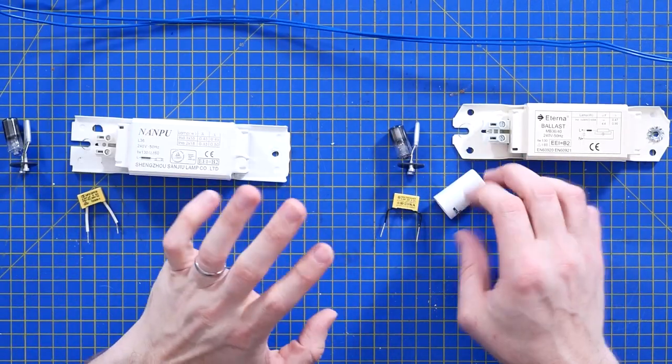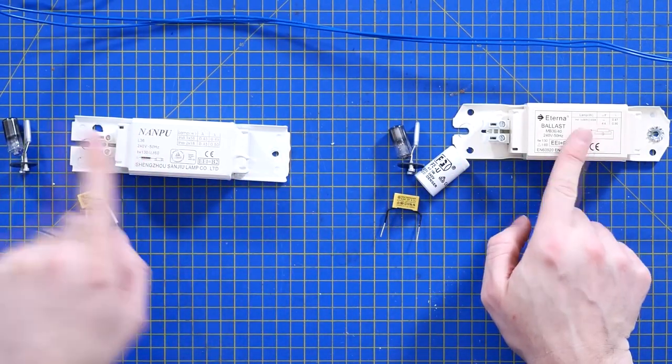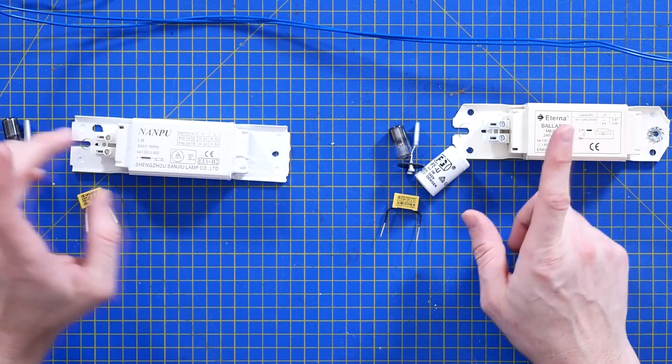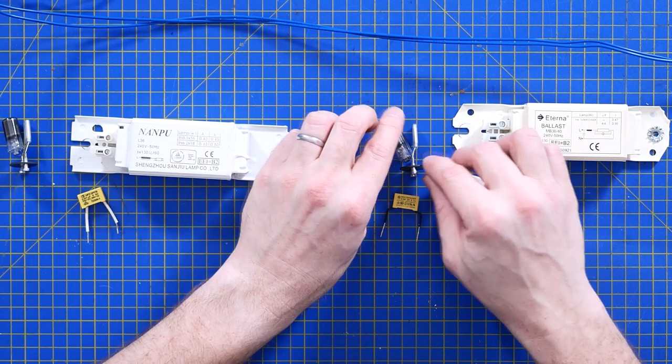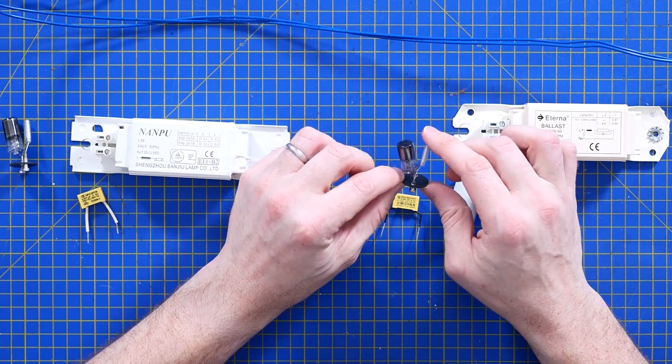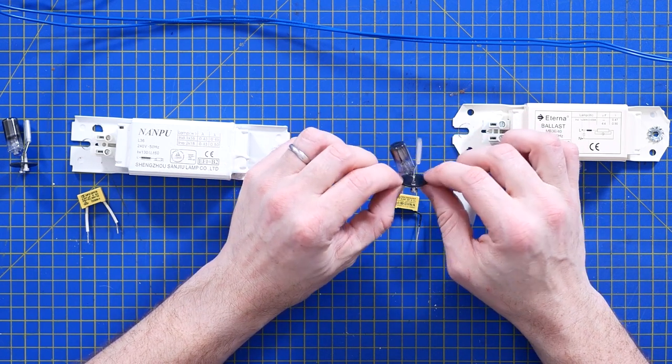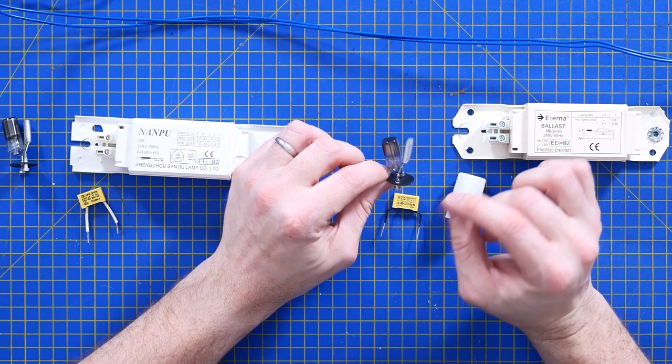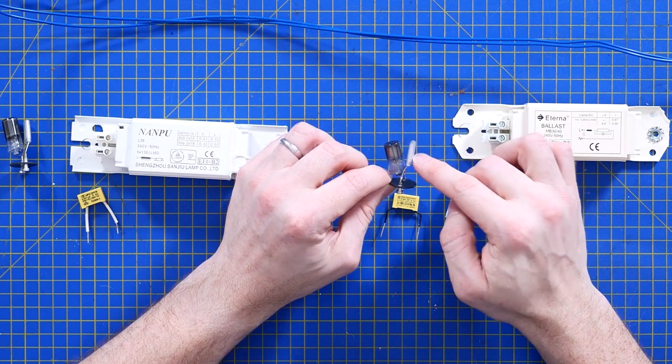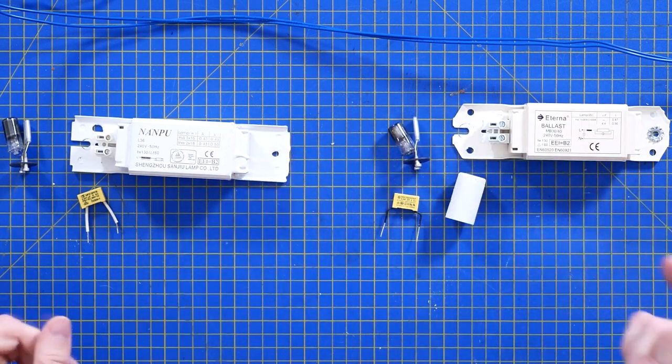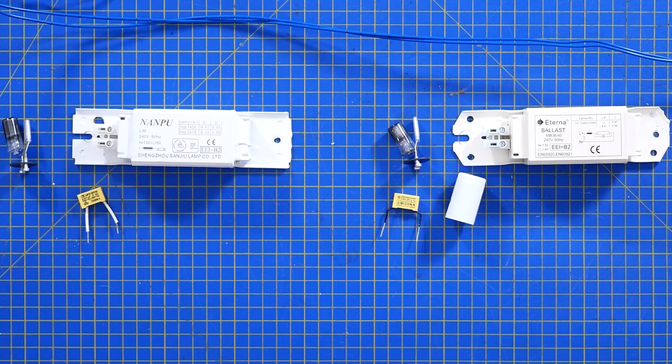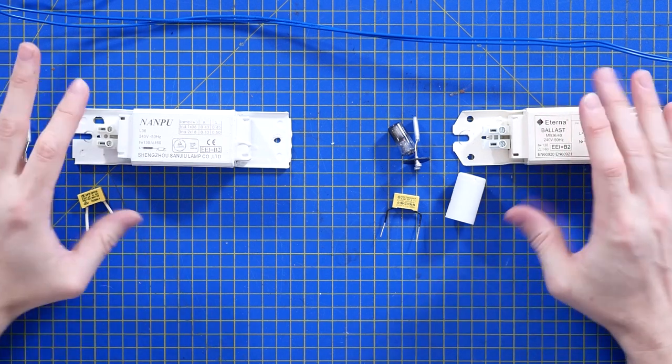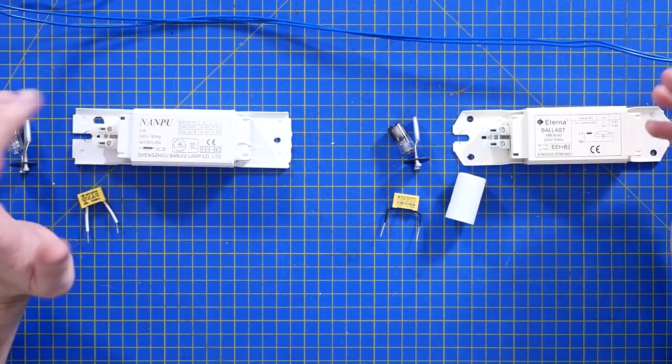So this type of starter that we similarly have for both of these fittings, the twin 18 and the 36 watt four foot, are what are called preheat starters. So these will actually build a charge and allow that voltage through. And then they should try and strike when a bimetallic strip closes. And that's supposed to jumpstart the ignition of the lamp. So these examples are both choke control gear, magnetic control gear, or switch start control gear.